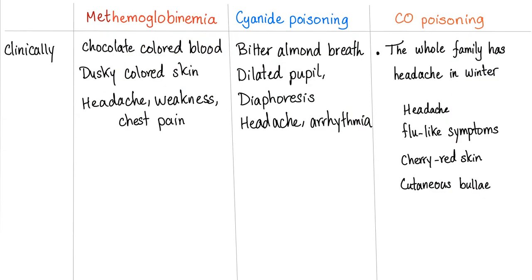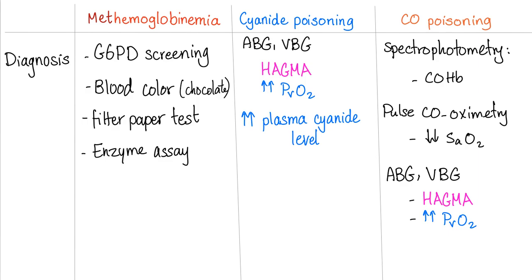Clinically speaking — methemoglobinemia: chocolate-colored blood, dusky-colored skin, headache, weakness, chest pain. Cyanide poisoning: bitter almond breath, dilated pupils, diaphoresis, headache, and arrhythmia. CO poisoning: the whole family has headache in the winter at the same time. Headache is the most common symptom. Flu-like symptoms without fever. Cherry red skin and cutaneous bullae.